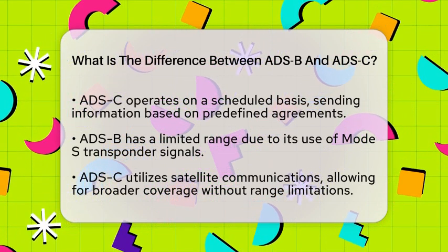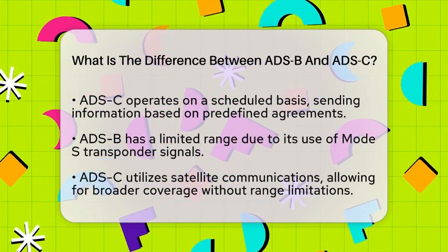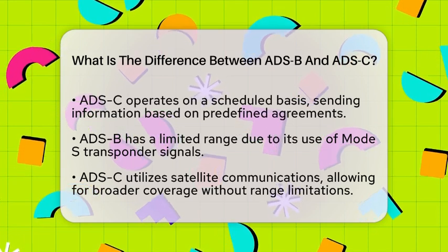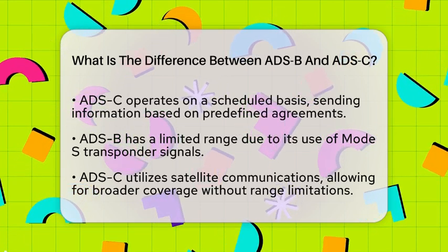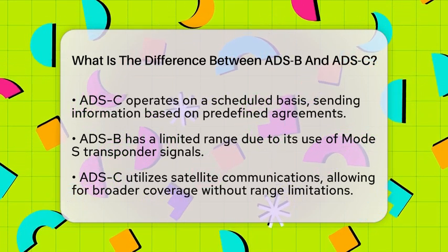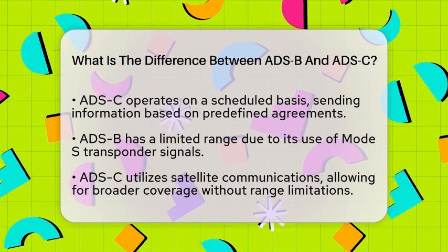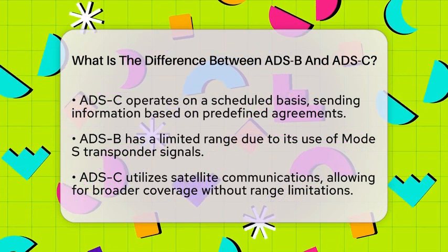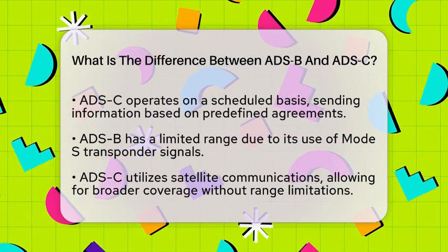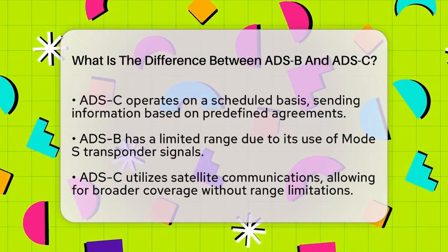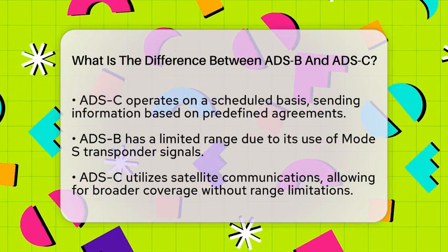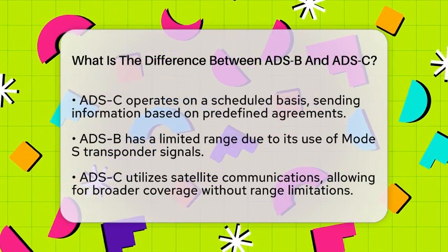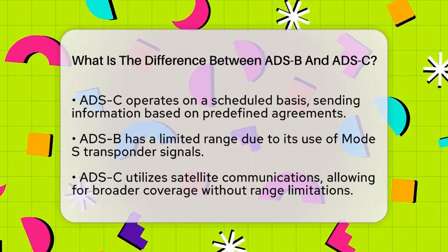Another key difference is the frequency of updates. ADS-B provides frequent updates, giving a more accurate and immediate picture of air traffic. In comparison, ADS-C updates positions less frequently, usually every 10 minutes. This makes ADS-C suitable for areas where constant surveillance is not necessary.